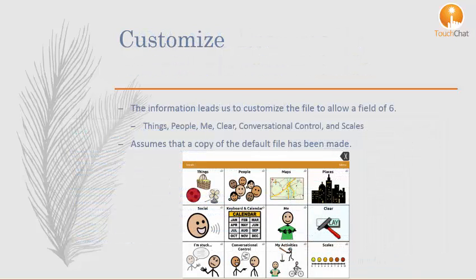By using the client information and the Kaya AAC resource, I might have determined that my client may benefit from a more limited grid size at this time. For example, we will create a 6-location grid size.